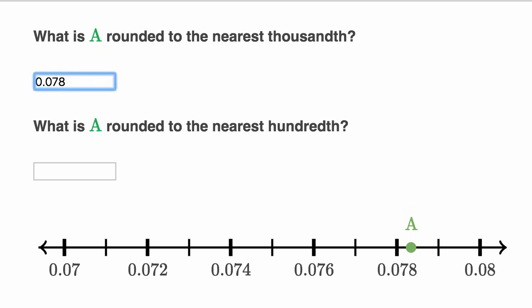What is A rounded to the nearest hundredth? Well, what are the hundredths that it's in between? It's in between seven hundredths and eight hundredths. And which one is it closer to? Well, it's closer to eight hundredths, 0.08. So once again,